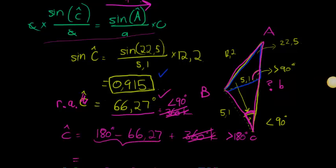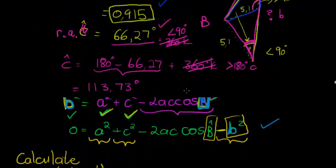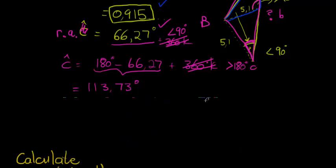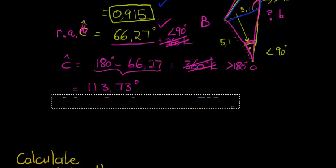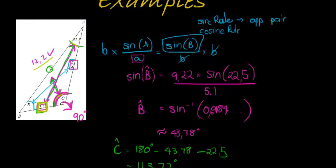Using the second solution: 180 minus 66.26 gives 113.73 degrees. We had it as 113.72 earlier — just a small rounding difference. That's what I wanted to draw your attention to: when one of our angles in the triangle is greater than 90 degrees, an obtuse angle, using the sine rule comes with a little warning.